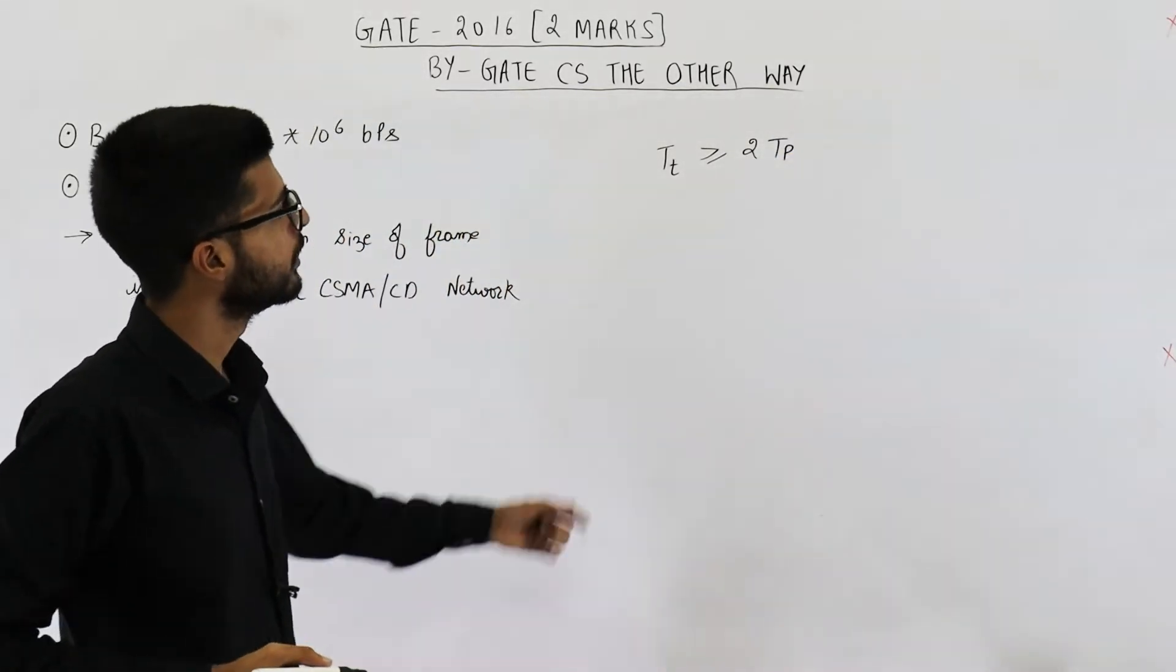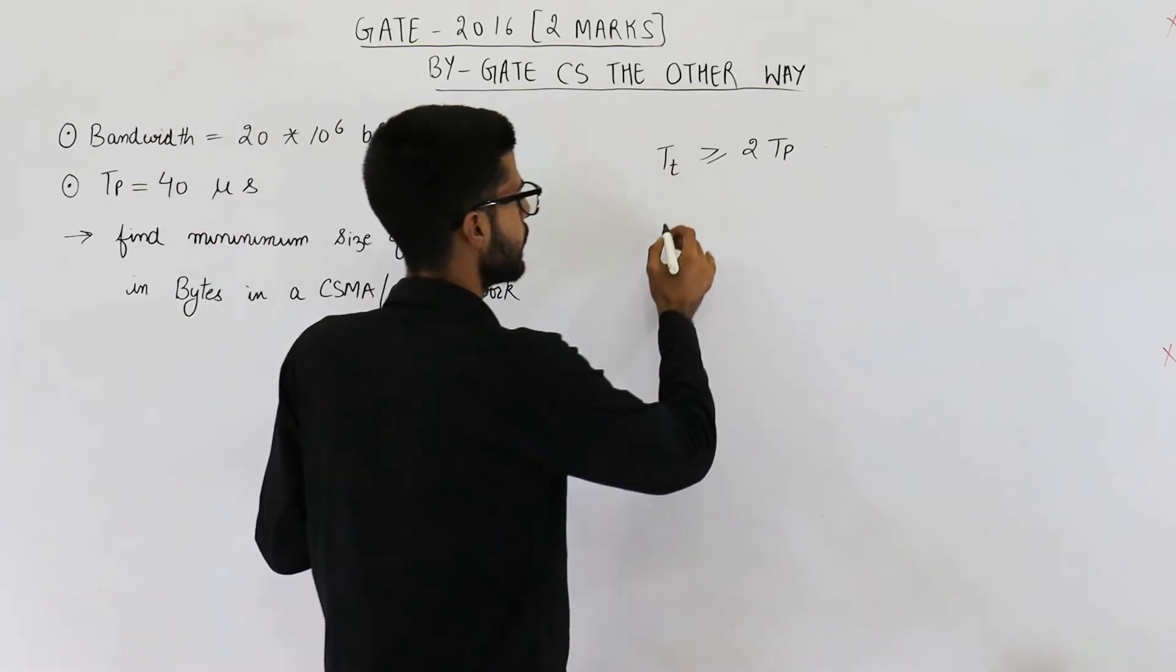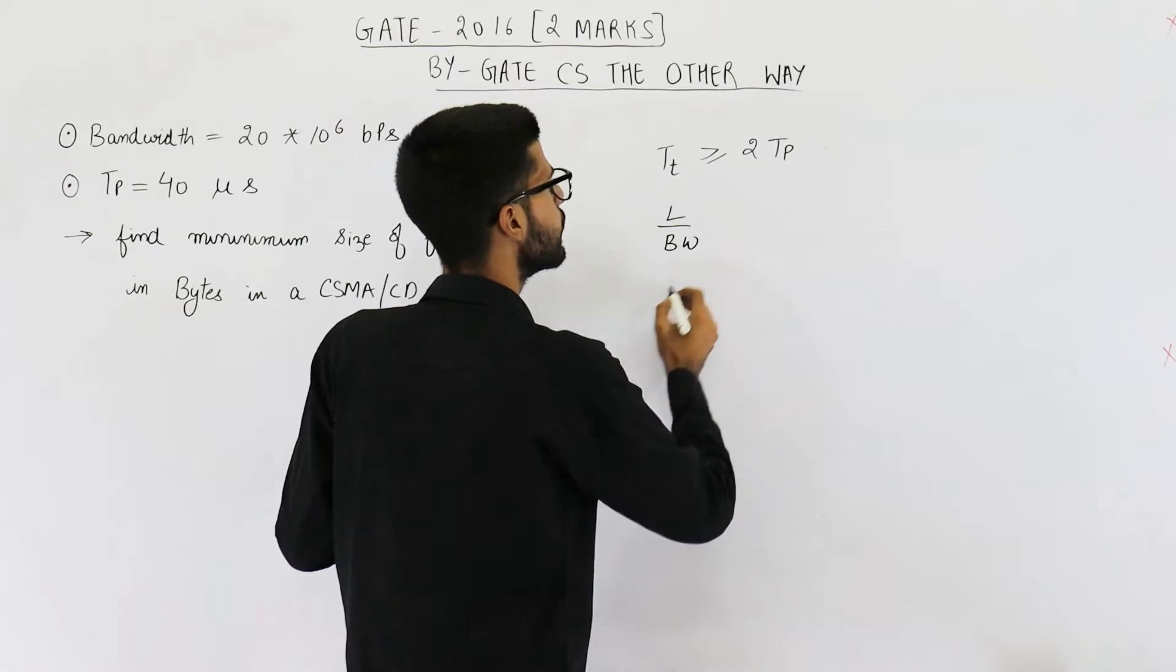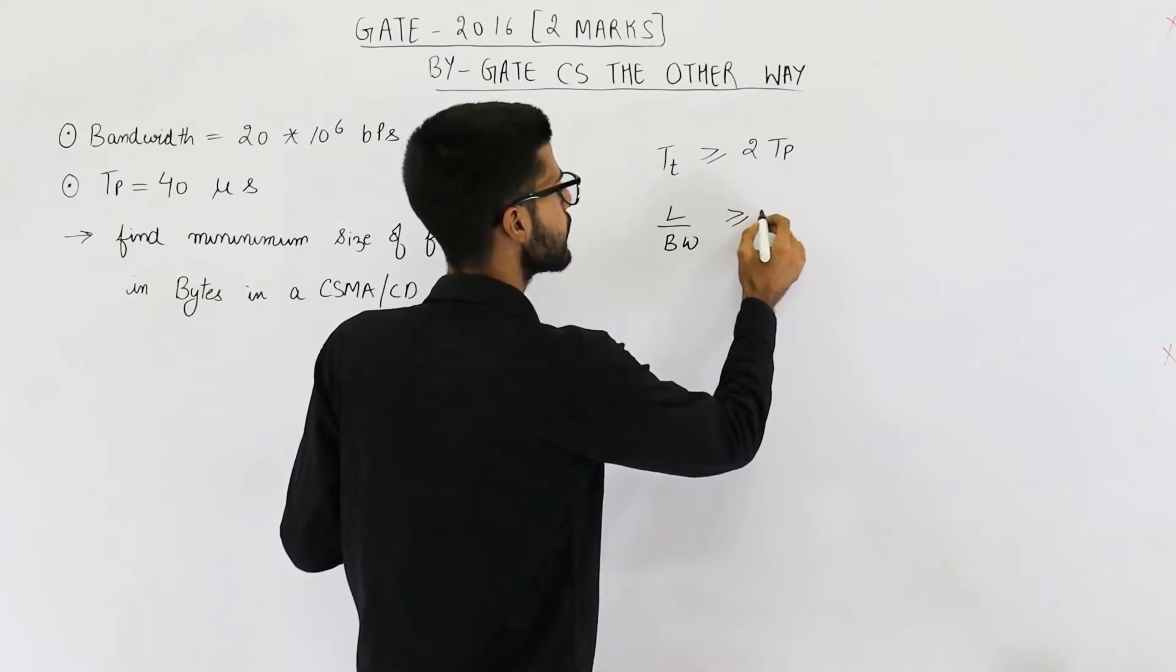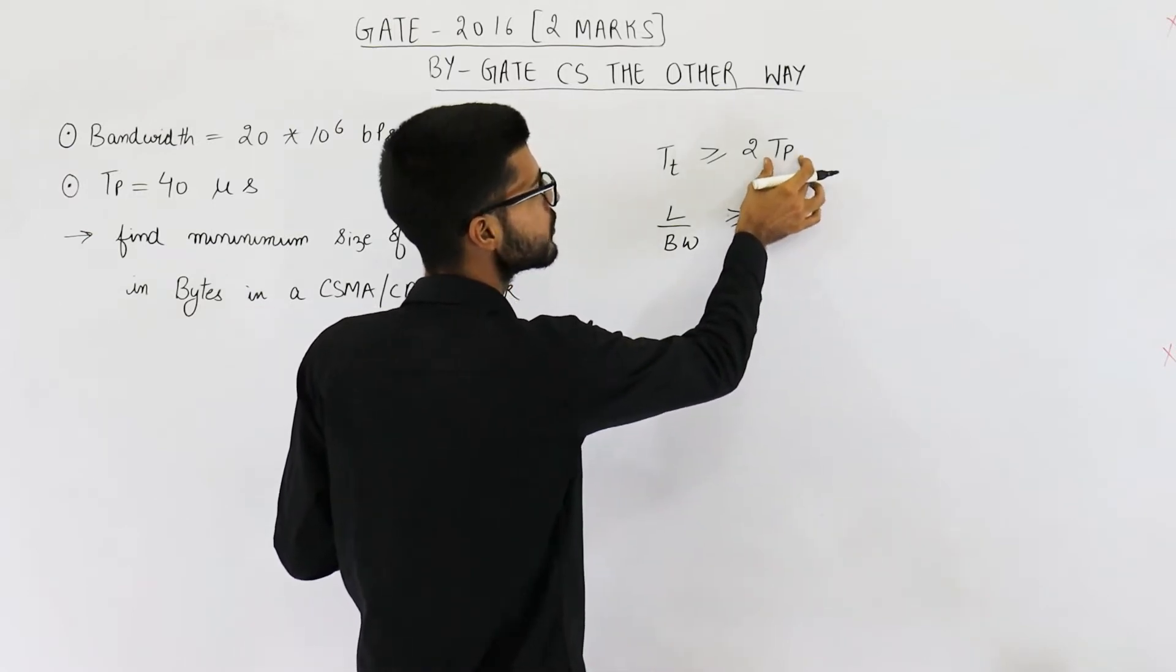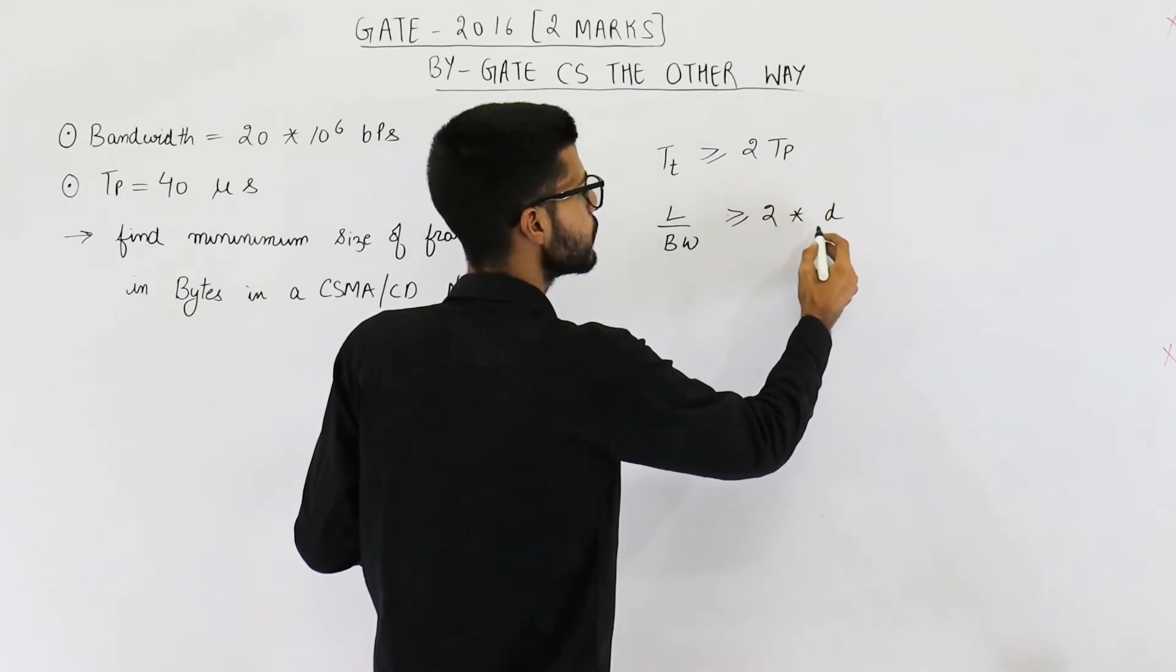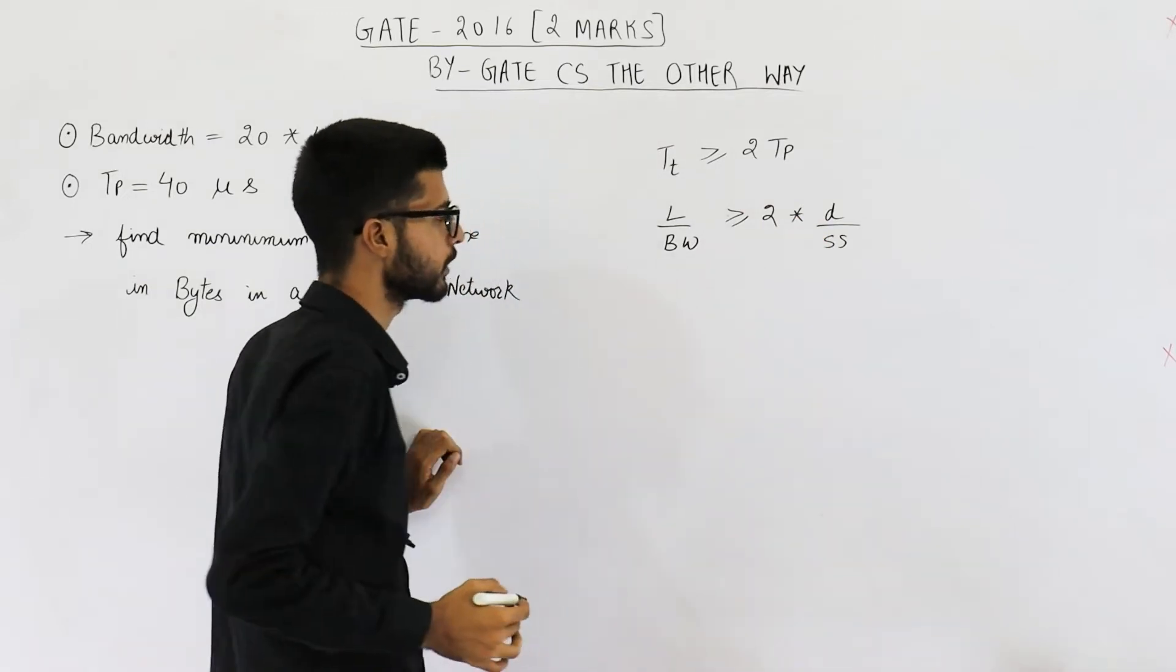Now TT is defined as length of the packet divided by bandwidth. This is greater than or equal to twice TP. TP is defined as distance between the nodes divided by signal speed.